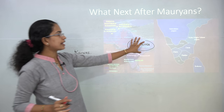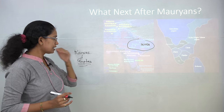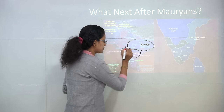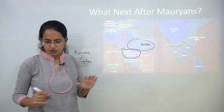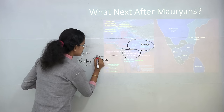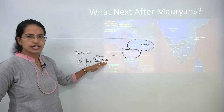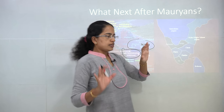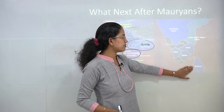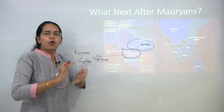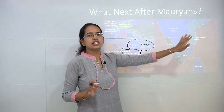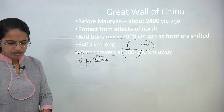In Western India, the Shakas were followed by the Satavahanas, who ruled for nearly 400 years and were finally succeeded by the Vakatakas. In South India, the Mauryan Empire was succeeded by three kingdoms — Chola, Chera, and Pandya — which were later succeeded by the Pallavas and Chalukyas. As a result, all of India was broken down into smaller empires and kingdoms, and never again in history was such a huge empire revived.